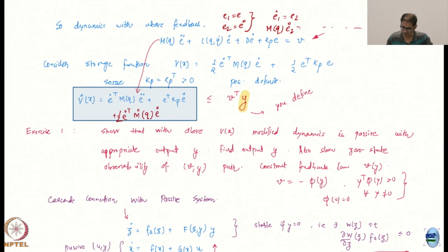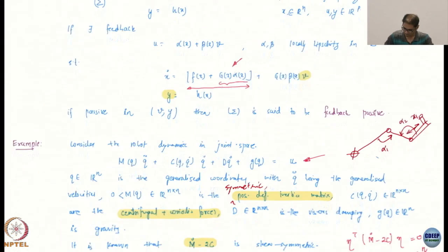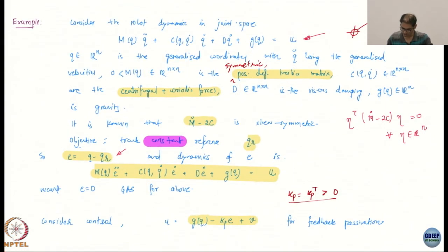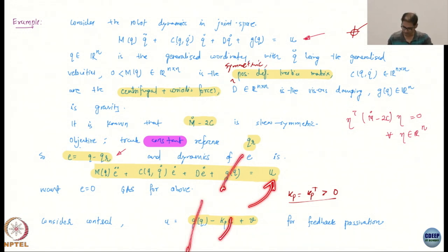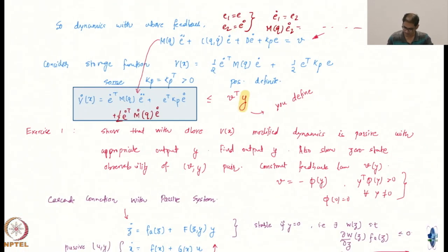I am already saying what U is, because I know this will work. The control is G(q) minus K_p*E plus V, where V is the new control, and I am going to claim the system is feedback passive with this control and some output — the output is not decided yet. If I plug this control in, the gravity terms G(q) cancel out, and the K_p*E goes to the left-hand side as a positive term.